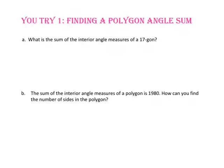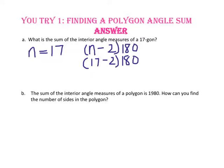Pause the video and do you try number one. What is the sum of the interior angle measures of a 17-gon? Since a 17-gon has 17 sides, we will use 17 for n. Since 17 minus 2 is 15, we will have 15 times 180, which is 2,700 degrees for the interior angle sum of a 17-gon.